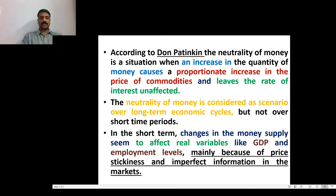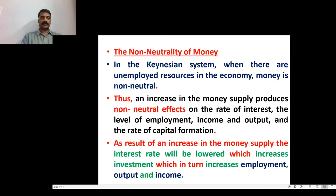Non-neutrality of money is put forward by Keynesians. Keynes says there are unemployed resources in the economy, so money is non-neutral. An increase in the money supply produces non-neutral effects on the rate of interest, the level of employment, income and output, and the rate of capital formation.